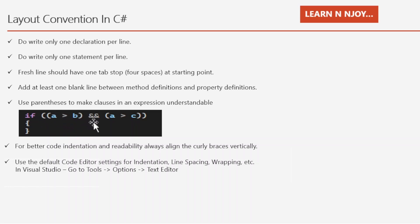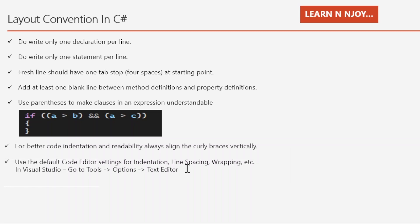Number five: use parentheses to make clauses in an expression understandable. For example, 'if (a > b) && (a > c)' — each clause is wrapped in parentheses for clarity. Number six: for better code indentation and readability, always align the curly braces vertically — the opening and closing braces should match vertically. Number seven: use the default code editor settings for indentation, line spacing, and wrapping, which you can find in Visual Studio under Tools > Options > Text Editor.